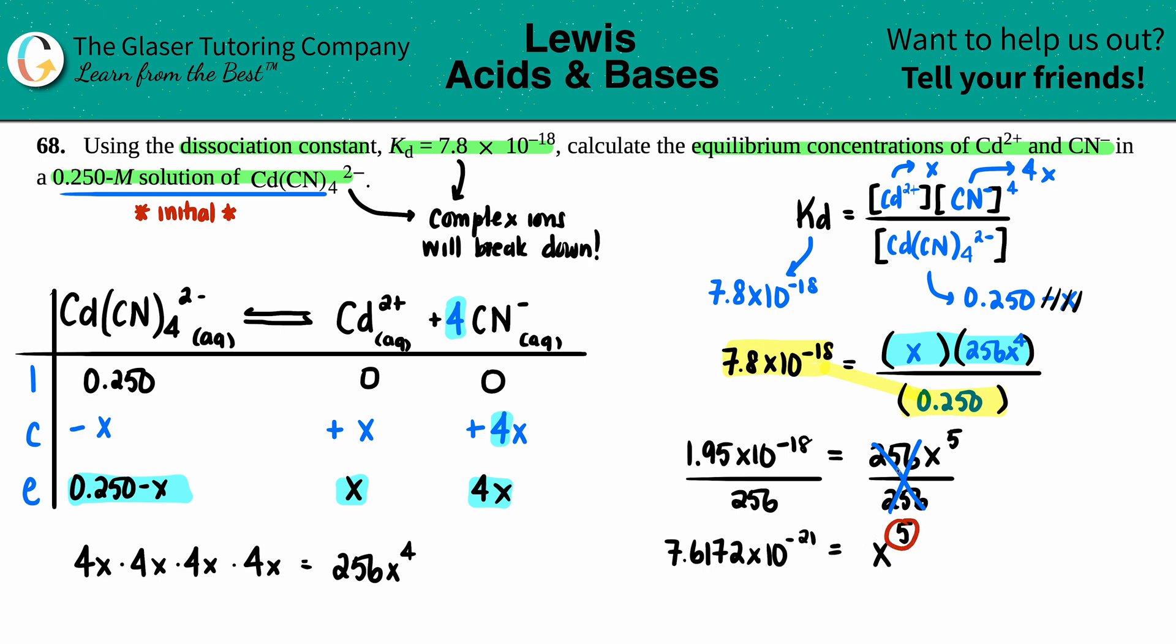If we want to get rid of this fifth, we would have to do the fifth root on both sides. I can just raise it to the inverse: one over five. I'll raise this to the one over five, and I get x equals 9.47 times 10 to the negative fifth.